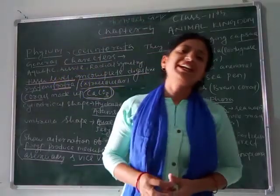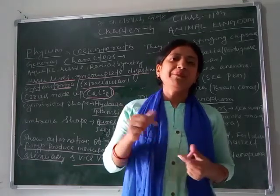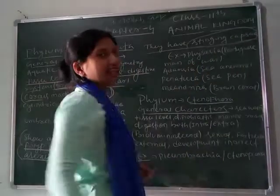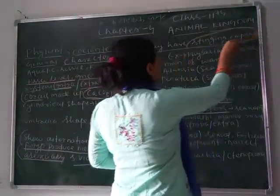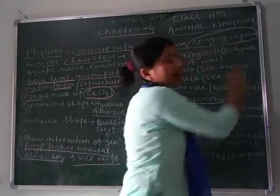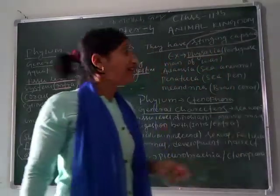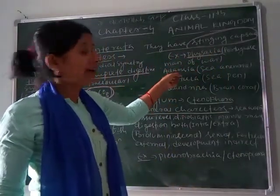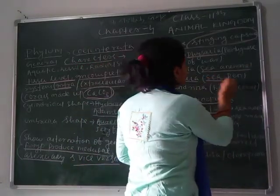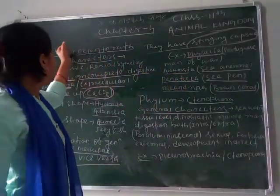They have stinging capsules — that is why they are called Cnidaria. Stinging capsules help them catch prey and protect from predators. Examples of Coelenterates: Physalia (Portuguese man-of-war), Adamsia (sea anemone), Pennatula (sea pen), and Meandrina (brain coral).